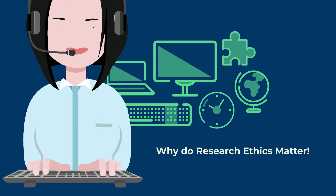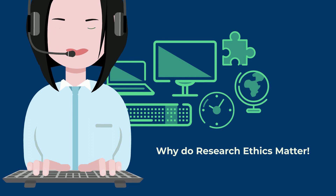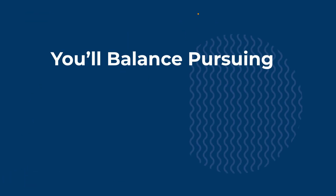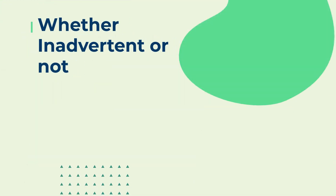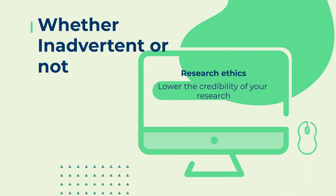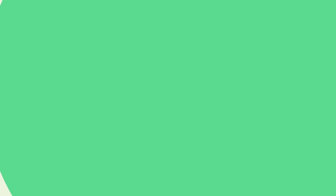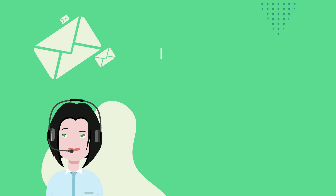These principles make sure that participation in studies is voluntary, informed, and safe for research subjects. You'll balance pursuing important research aims with using ethical research methods and procedures. It's always necessary to prevent permanent or excessive harm to participants, whether inadvertent or not. Defying research ethics will also lower the credibility of your research, because it's hard for others to trust your data if your methods are morally questionable. Even if a research idea is valuable to society, it doesn't justify violating the human rights or dignity of your study participants.